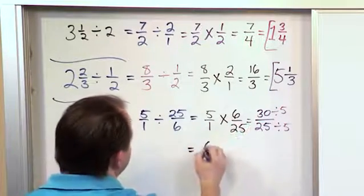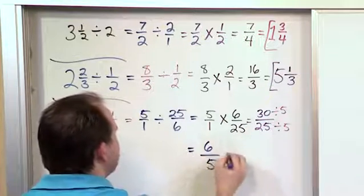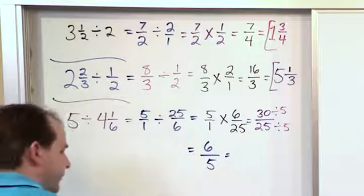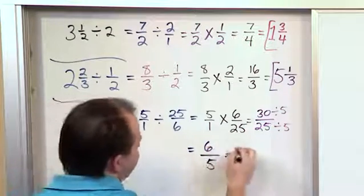Now this is still improper. It's simplified in terms of lowest terms but it's still improper. So let's change it back. How many times will 5 go into 6? Only one time.